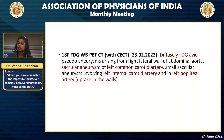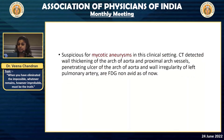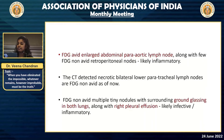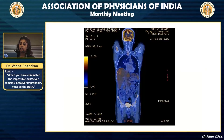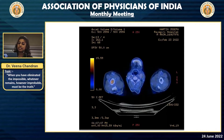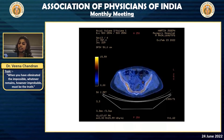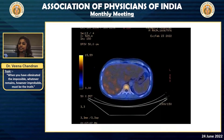An FDG PET was taken, which showed diffusely FDG-avid pseudoaneurysms in multiple places — in the right lateral wall of the abdominal aorta, in the left common carotid, left internal carotid, and left popliteal artery — suspicious of mycotic aneurysms. There were also FDG-avid enlarged abdominal para-aortic lymph nodes, and chest ground-glass opacification with right-sided pleural effusion, opined to be either infective or inflammatory. The images showed the left-sided carotid artery aneurysm, the para-aortic lymph node uptake, and the liver taking up FDG.